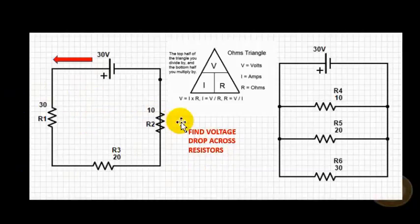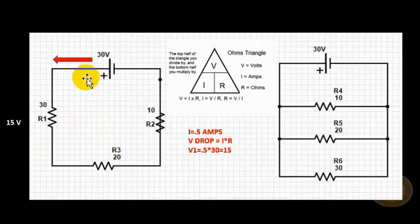Now another thing that happens - when we defined what a resistor does, the definition said that it slows down and it drops voltage.